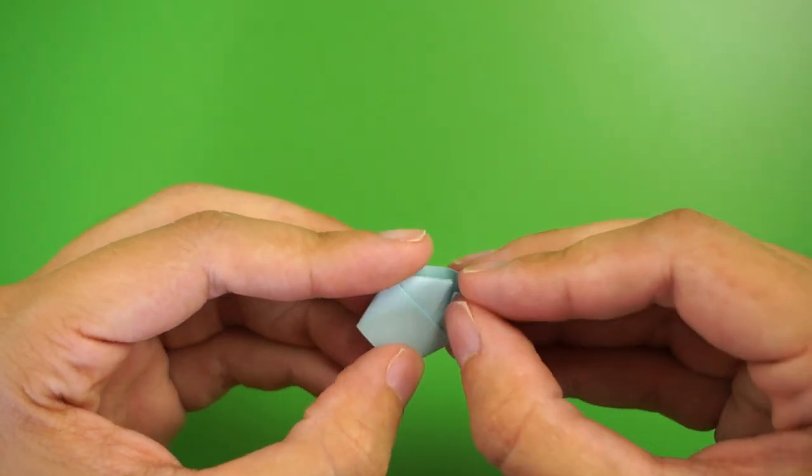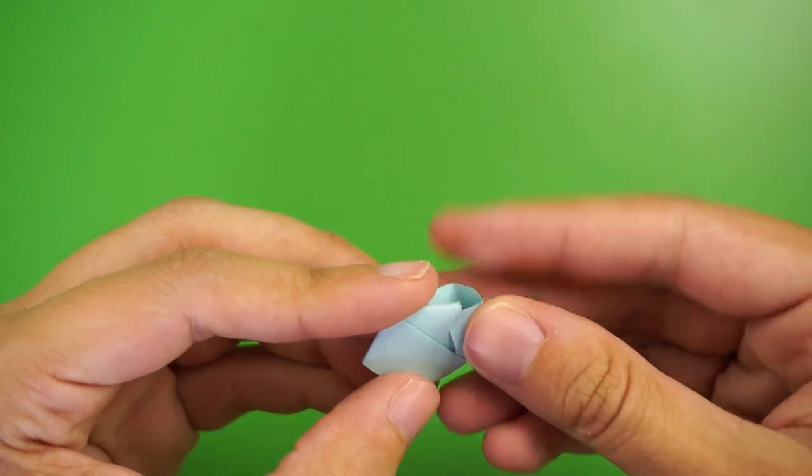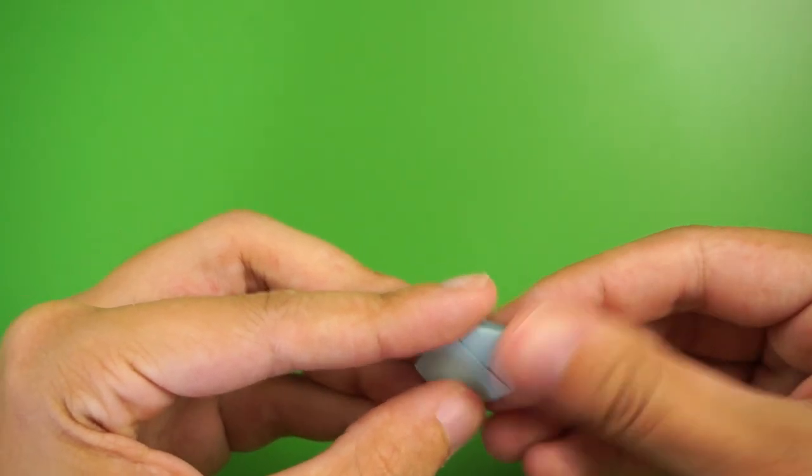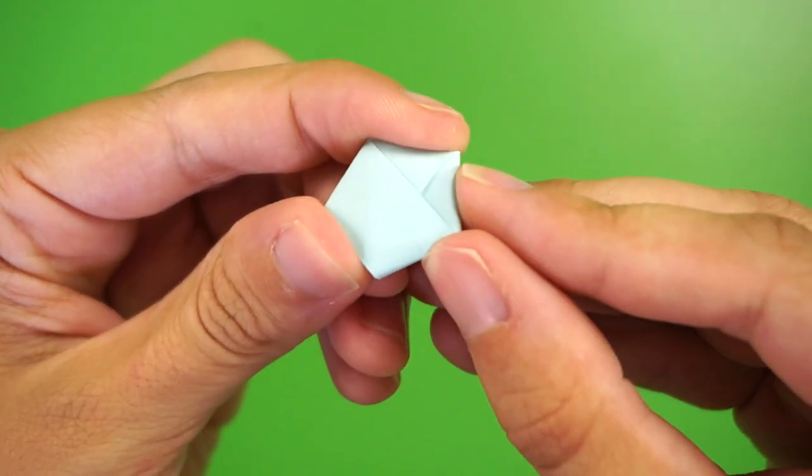Once you've reached the end, carefully tuck it into this little pocket on the shape you just rolled up. You can trim or fold it over if the piece is too long.